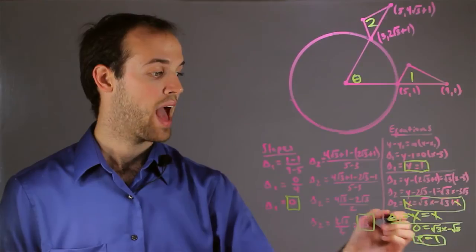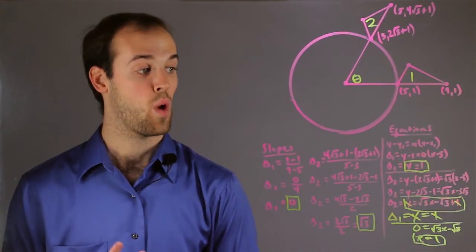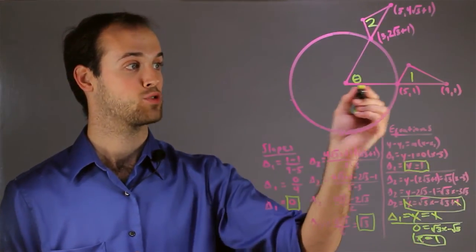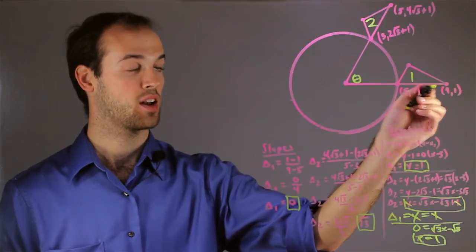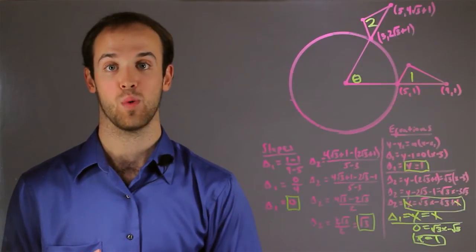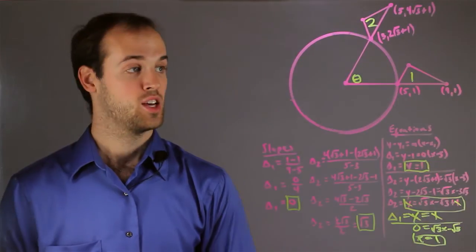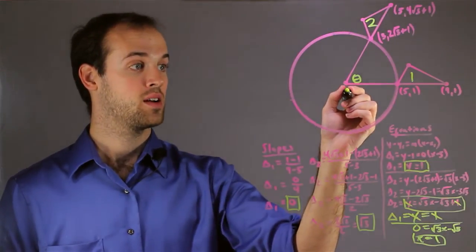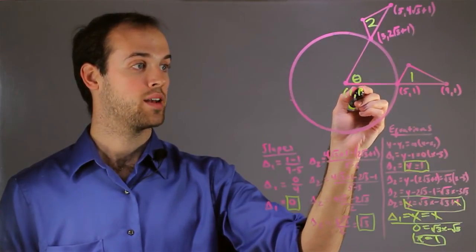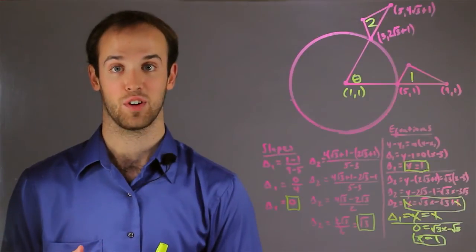So now I know the x-coordinate of this intersection, and the y-coordinate, again, because the base of triangle 1 is a horizontal line, the y-value is always going to be 1. So I know that this point right here must reside at 1,1, and that is the center of our circle.